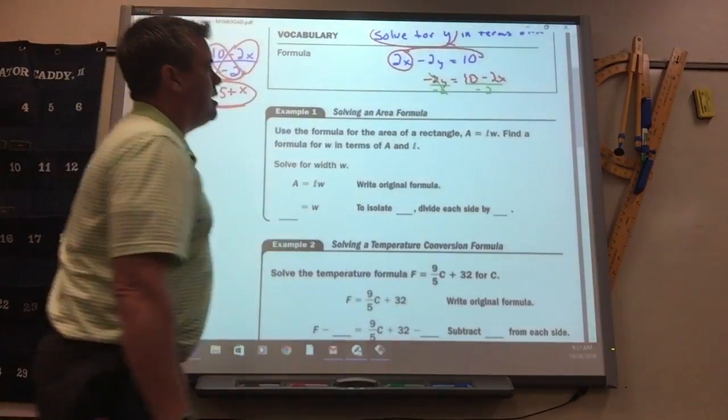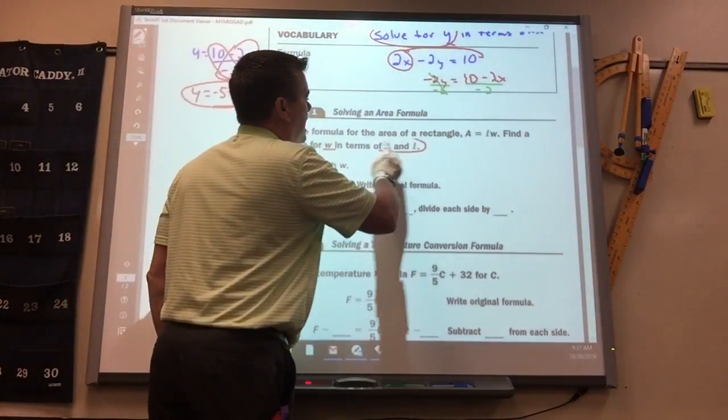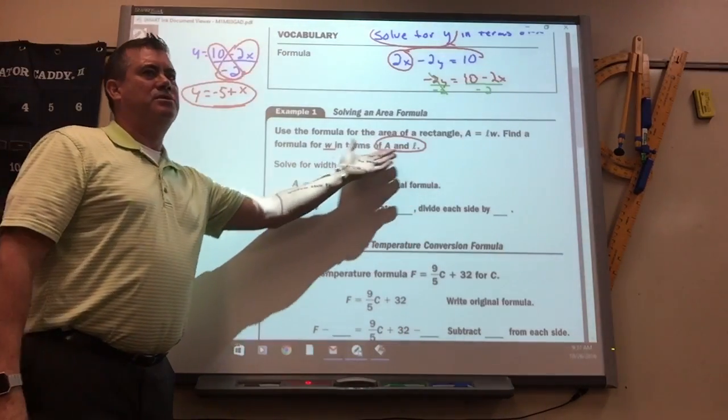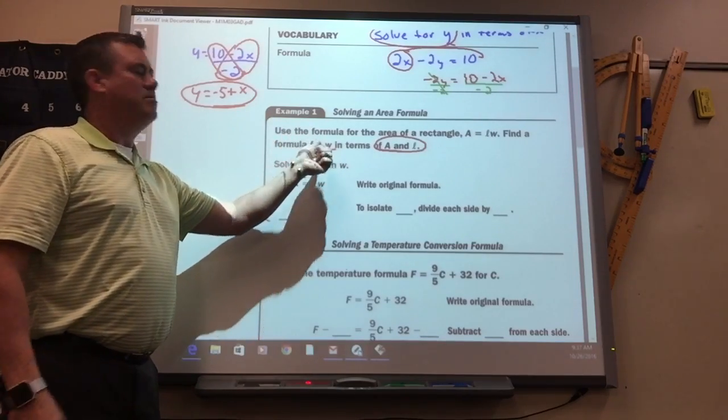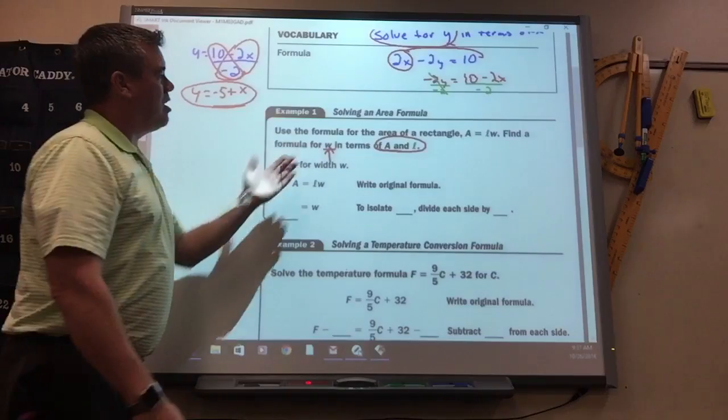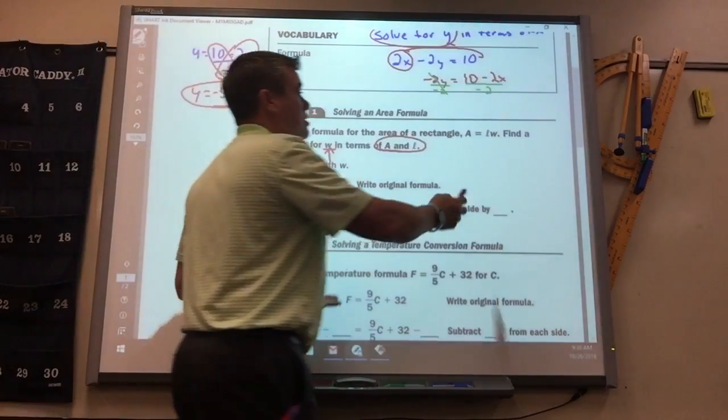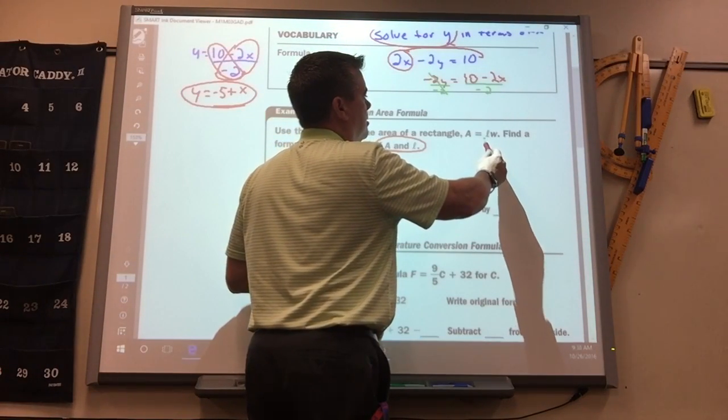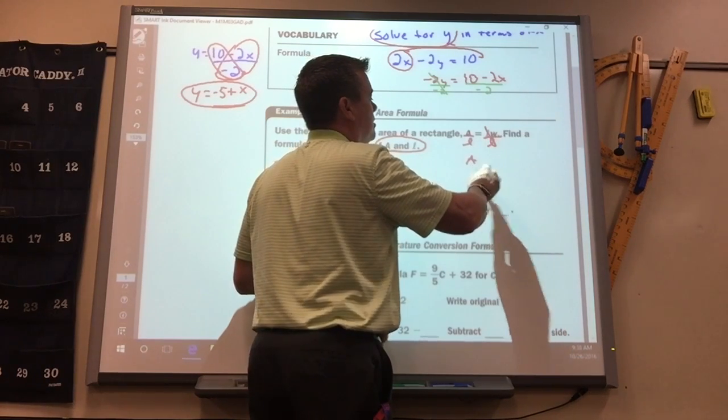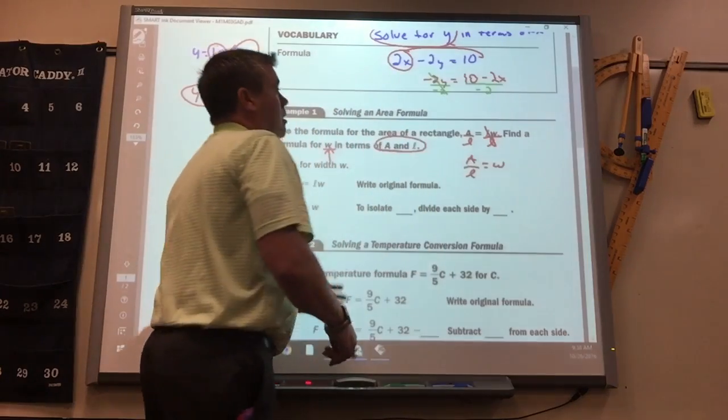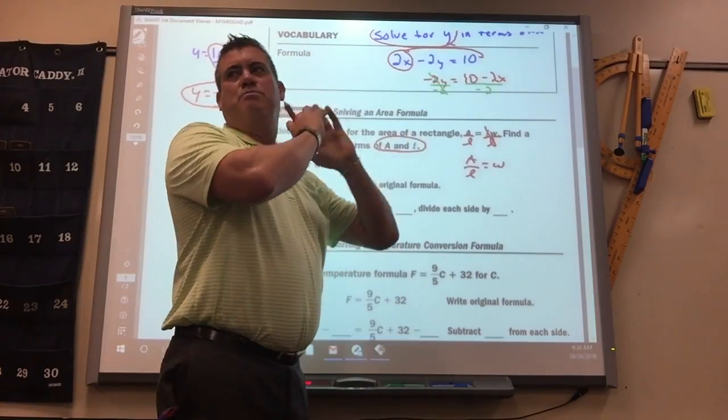So like this formula here, area is length times width. Find a formula for w in terms of a and l. So do you know what that means to do? Get what by itself? Get w by itself. And all they're saying is the other two letters on the other side are going to be a and l. So this is a simple one. What do we got to do to get w by itself? Move l over. Divide by l. And you're done. Remember, if it's hooked to it, you're either going to have to multiply or divide to get rid of it. If it's separate, then you just move it across.